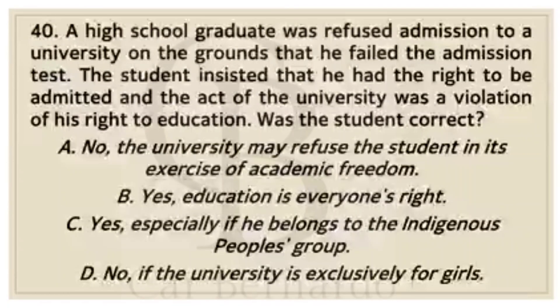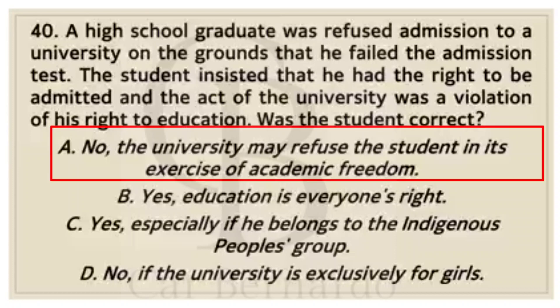Number forty: A high school graduate was refused admission to a university on the grounds that he failed the admission test. The student insisted that he had the right to be admitted and the act of the university was a violation of his right to education. Was the student correct? Letter A: No, the university may refuse the student in its exercise of academic freedom. Letter B: Education is everyone's right. Letter C: Yes, especially if he belongs to the indigenous people's group. Letter D: No, if the university is exclusively for girls. Answer: Letter A, No, the university may refuse the student in its exercise of academic freedom.